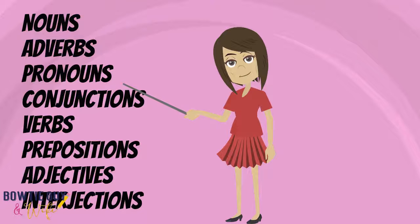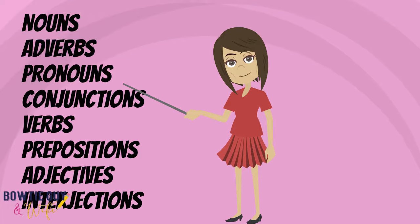Parts of speech include nouns, adverbs, pronouns, conjunction, verbs, prepositions, adjectives, and interjections. So what are all of these parts of speech and what do they have to do with how we write? We'll answer that in today's video.